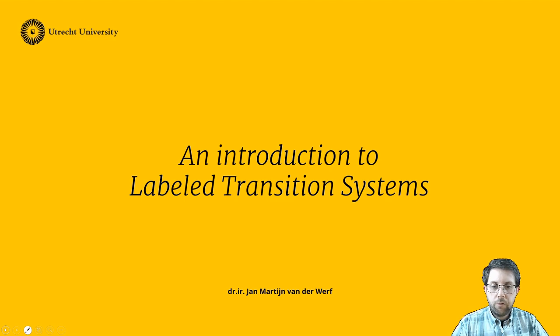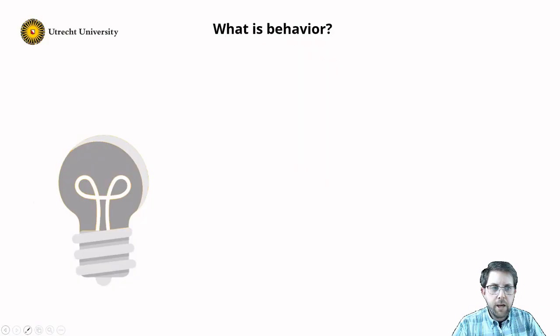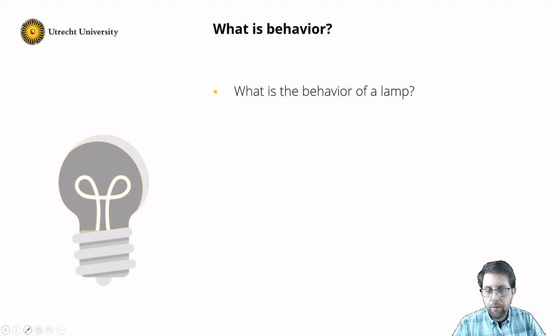In this clip, I want to introduce labeled transition systems to model behavior. So I first need to ask the question: what is behavior? I want to do this with a simple example — a lamp.